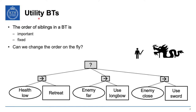Sometimes we would like to reorder the siblings. The ordering makes sense in some situations, but in others you might want a different ordering. So the question is: can we change the order on the fly? Utility behavior trees do exactly that.